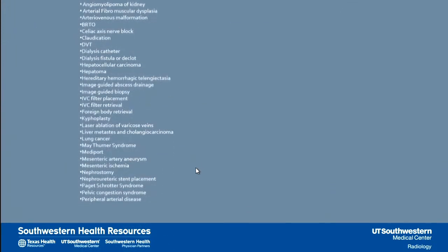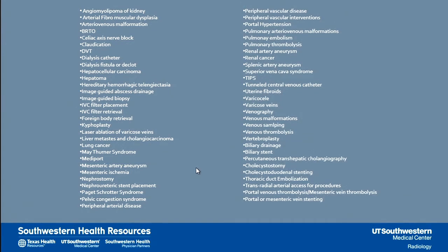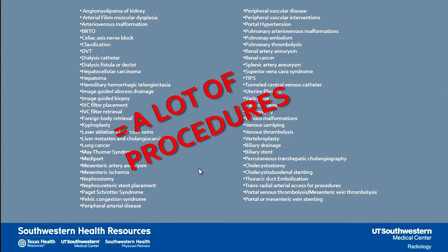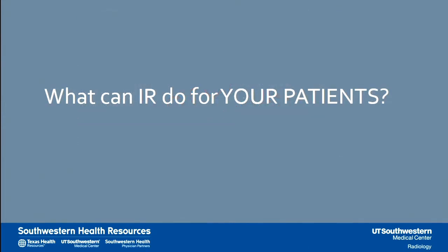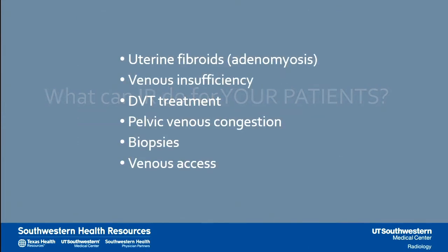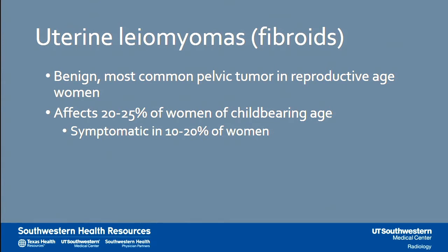What kind of procedures do we do? This is a short list — we do a lot of procedures. For a mostly primary care audience, what can we offer your patients? We treat uterine fibroids and adenomyosis, venous insufficiency, DVTs, pelvic venous congestion, and varicoceles. We provide biopsies and venous access for patients. I'll break down a couple of those to help you understand what we can offer and help you describe these procedures to your patients.